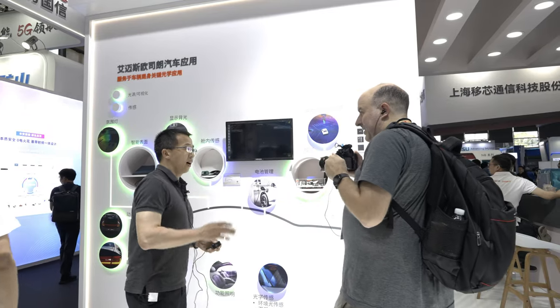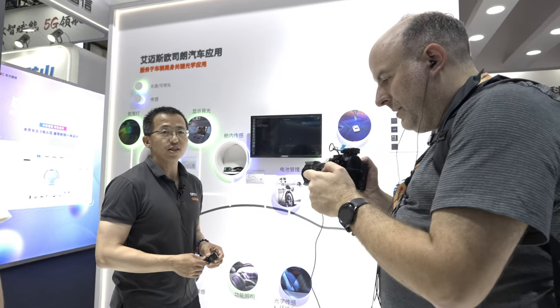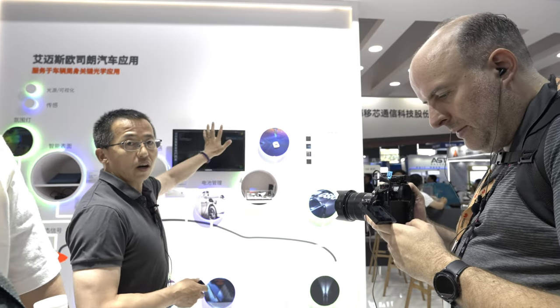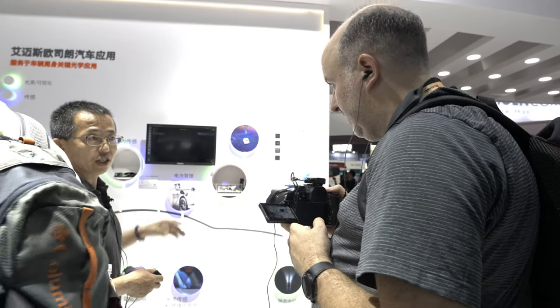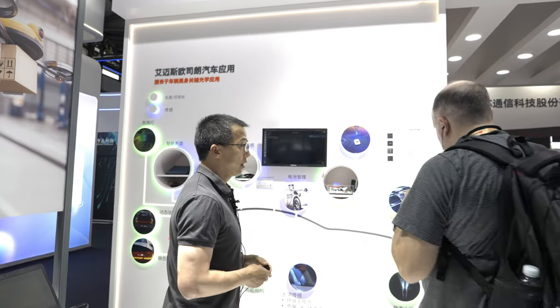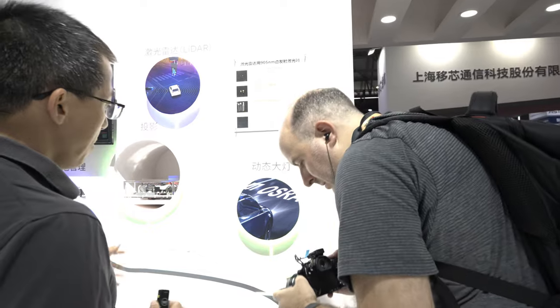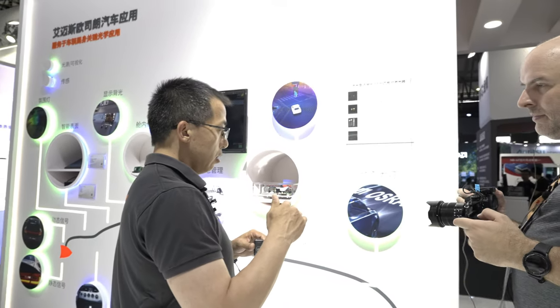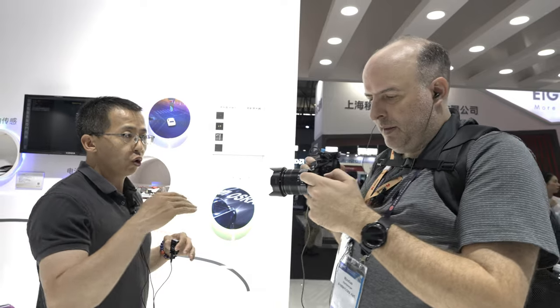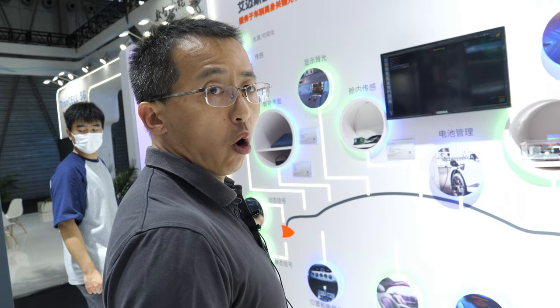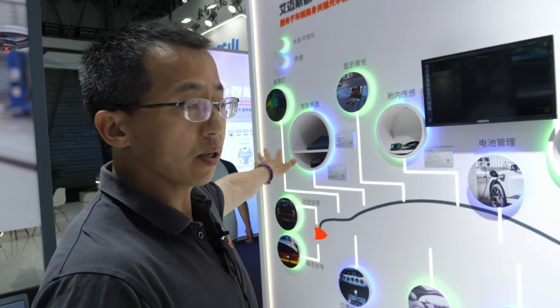Hello and welcome to the ams OSRAM booth. On this whole wall are the key applications for automotive. For automotive, ams OSRAM has two major directions: one is for all the light sources, the other direction is for all the sensing. On this wall we combine all of them together, like a car model showing all the applications mapping.